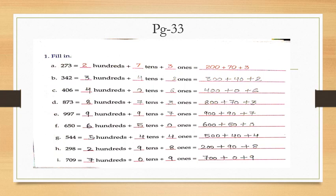Now look at Part B. The number is 342. Three is at hundreds place, four is at tens place, and two is at ones place. You will write: 3 hundreds + 4 tens + 2 ones. In expanded form: 300 + 40 + 2.